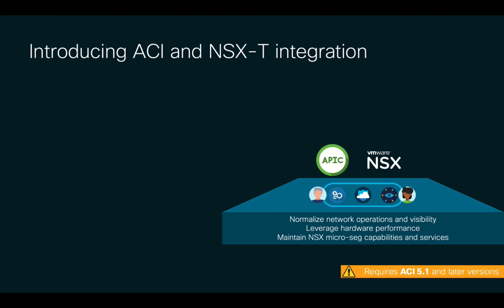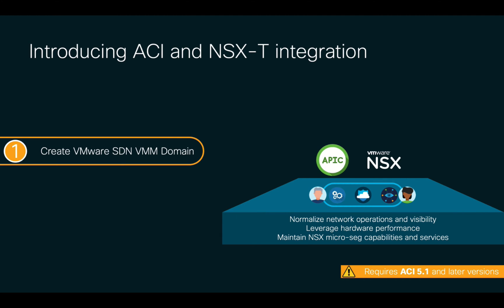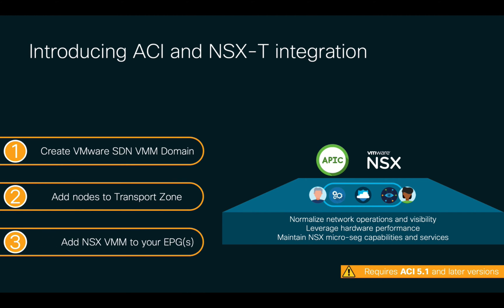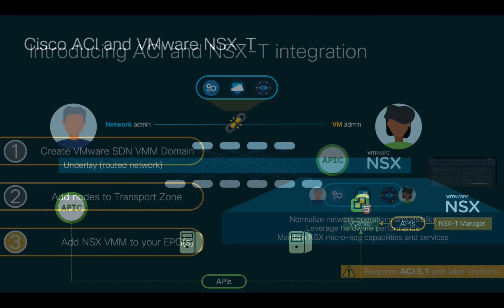ACI to NSX-T integration takes just three simple steps, and it follows the main concepts you already know. First, you create an NSX-VMM domain, which is called VMware SDN in ACI. Then, you associate your compute nodes to the transport zone on NSX-T Manager. And last, you associate your EPGs to the NSX domain you created in step one. That's it. Let's now take a closer look at these steps and how the integration works.